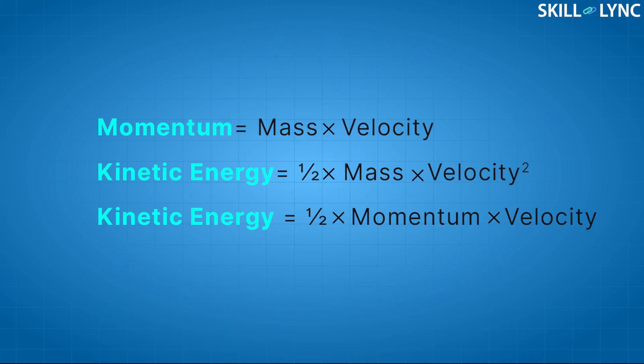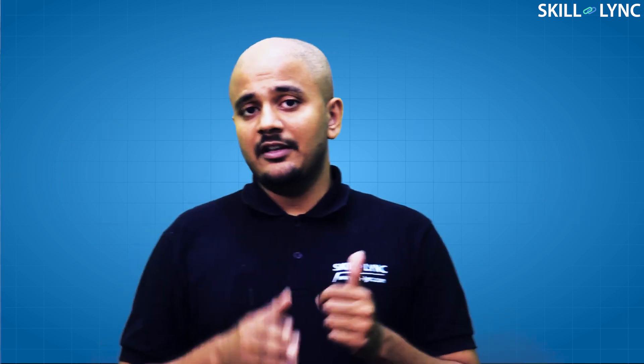Think of it in this way. Momentum is mass times velocity, and kinetic energy is half times mass times velocity squared. So kinetic energy is half times momentum times velocity. For the same momentum, your energy goes up in proportion to velocity. So in a jet engine, for the same momentum, you are wasting more energy by accelerating small masses of air to high velocity.